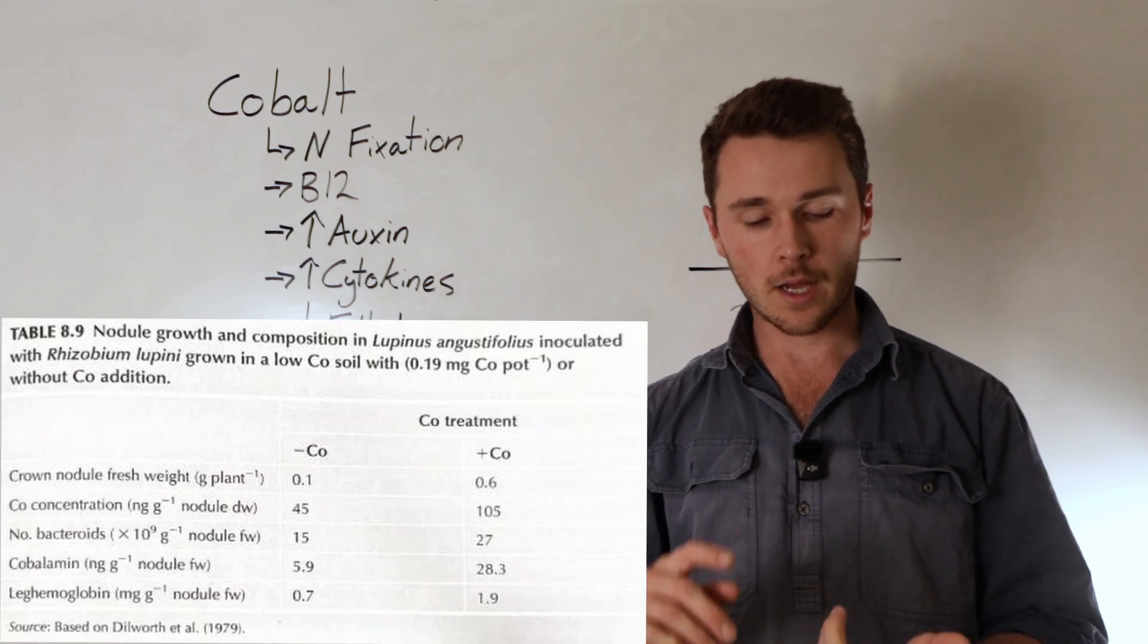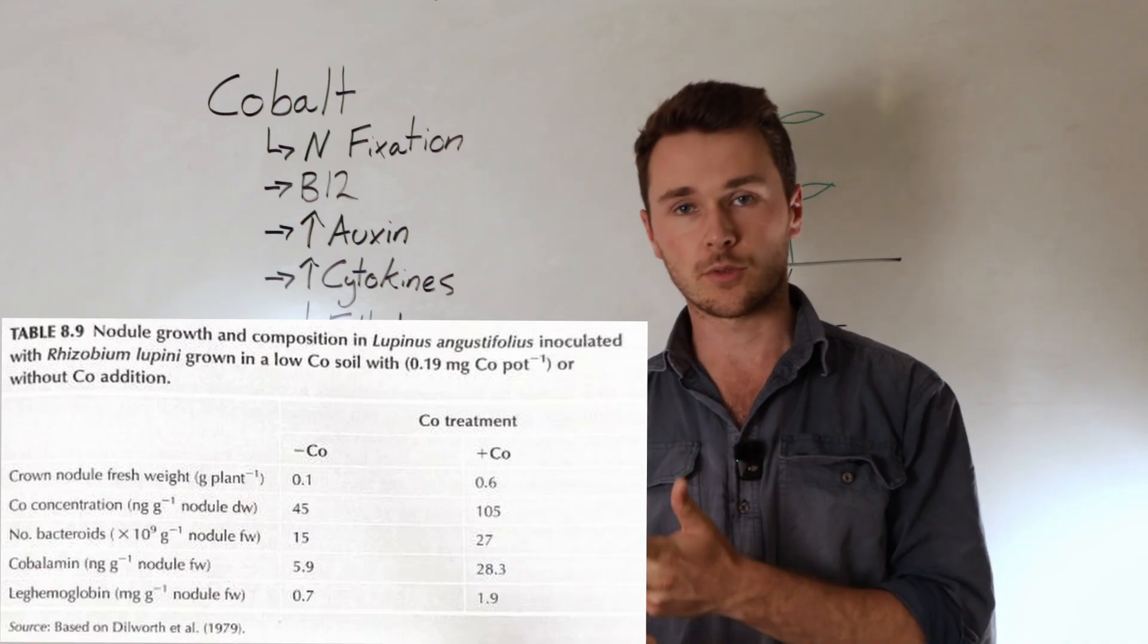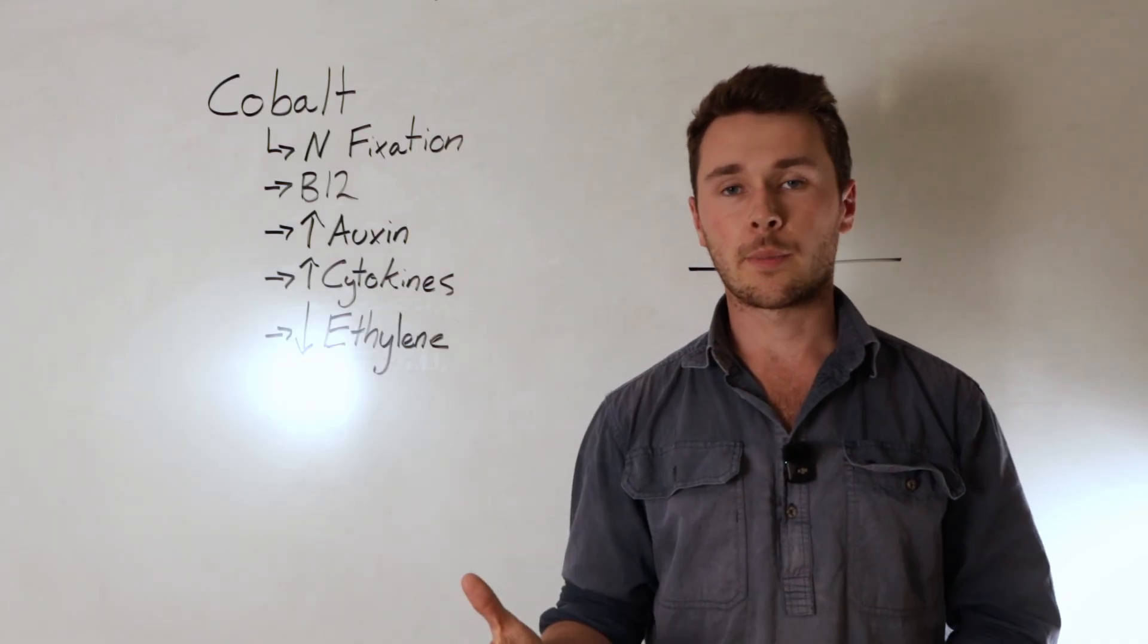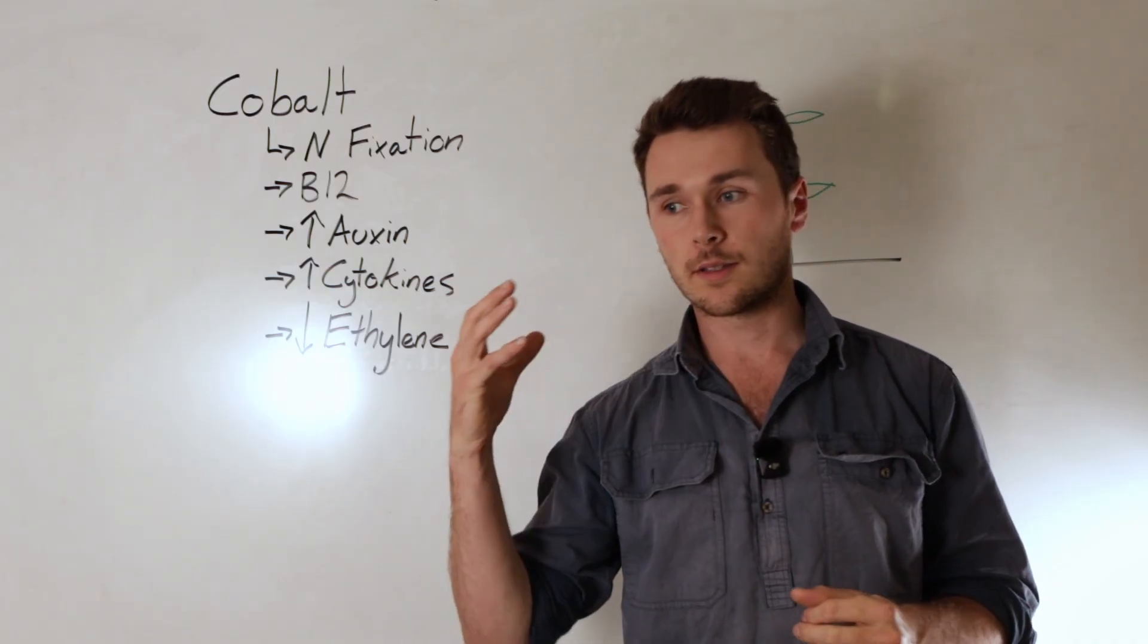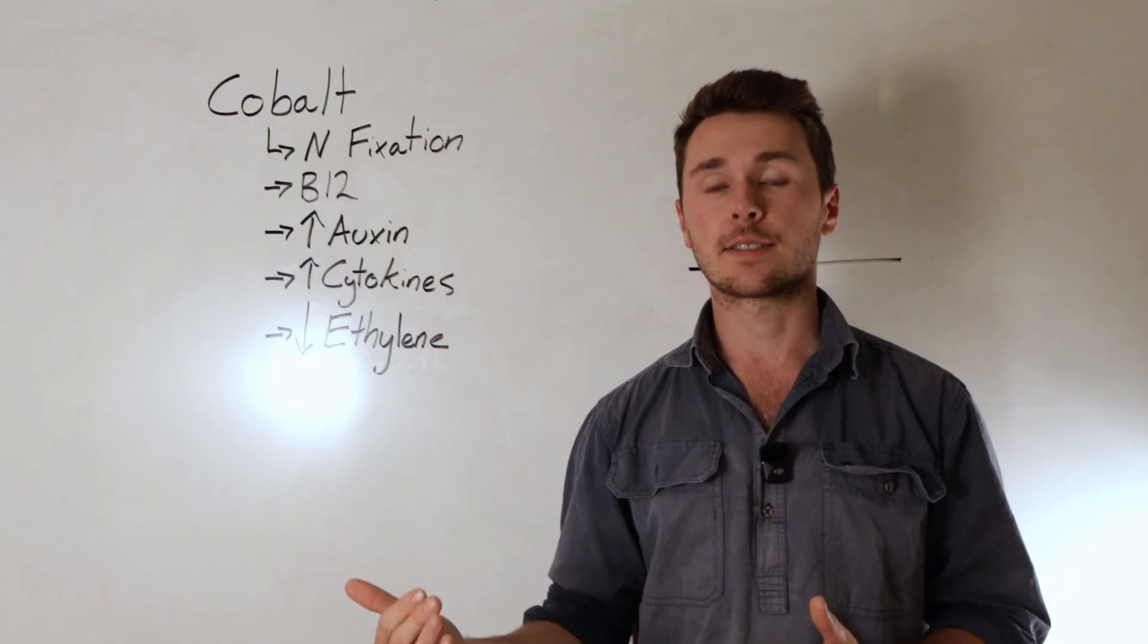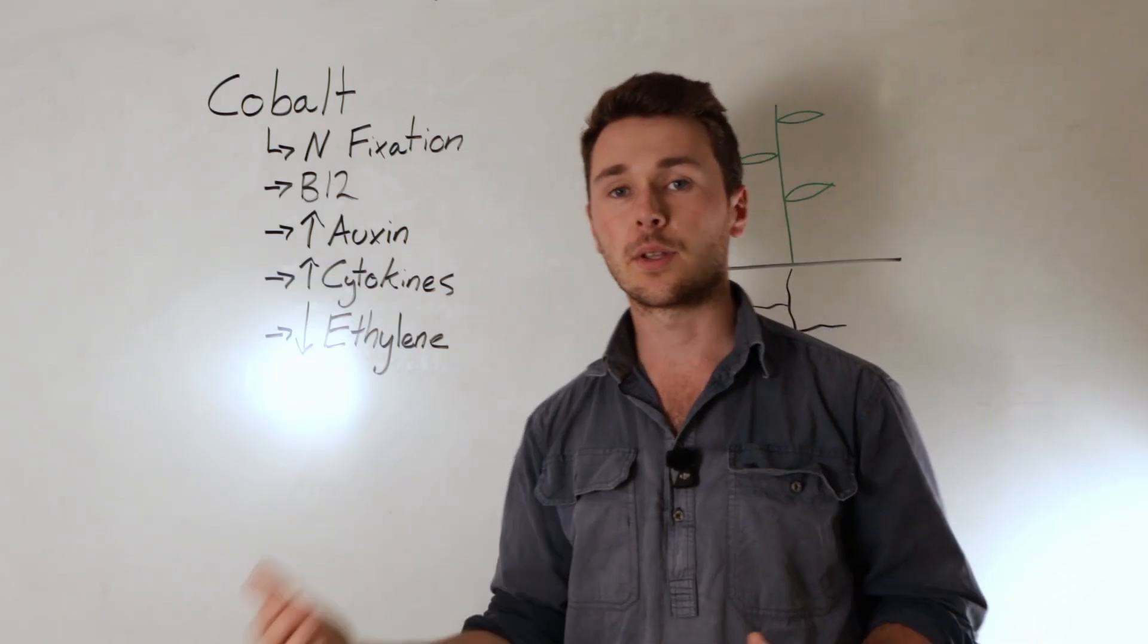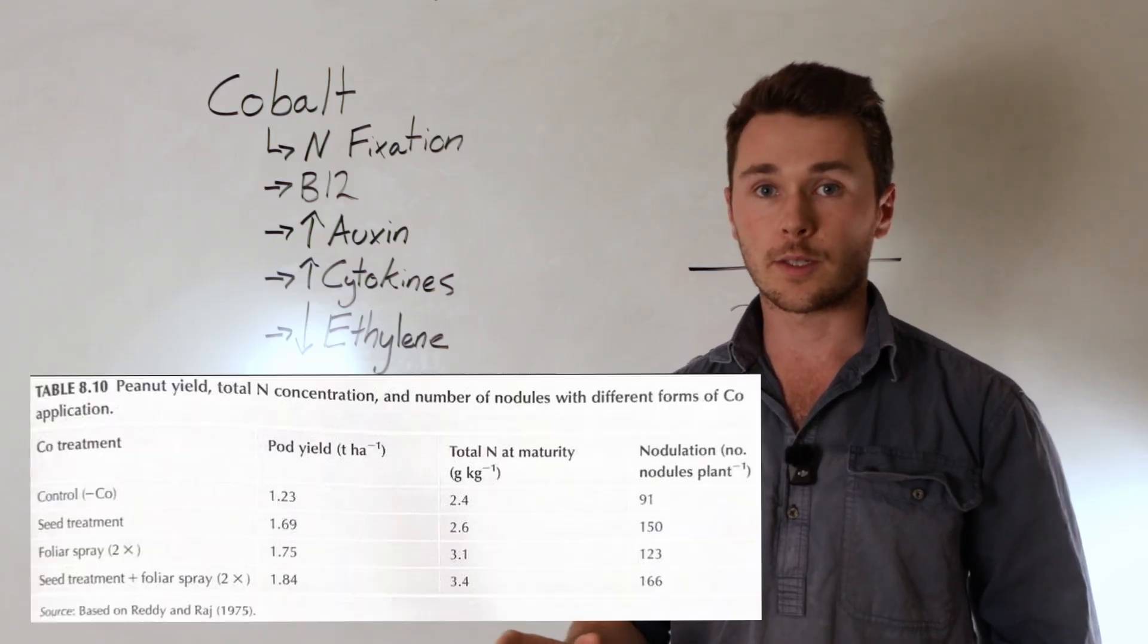Likewise you'll see in this table the number of nodules increased as well as the number of bacteria within each nodule increased as well. So when you think about the combination of not only more or larger nodules but also those nodules are then full of more bacteria, it makes for a very interesting increase in the nitrogen fixation or at least the ability for that plant to fix nitrogen.